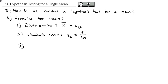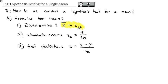We'll use that standard error to calculate our test statistic. Our test statistic is t equal to the difference between the mean of the sample and the hypothesized mean, divided by the standard error. These are the three pieces that will help us find the p-value to conduct our hypothesis test.